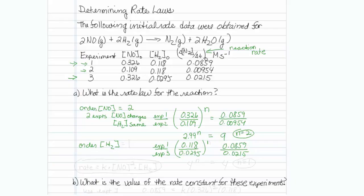So let's see, what do we got here. 0.118 divided by 0.0295 is 4 to the Nth is equal to 0.0859 divided by 0.0215. That's also equal to 4. So in this case, N is equal to 1.